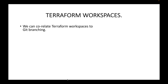Git branching can be used whenever you want to isolate your work. By default we have one branch in Git, which is either your master branch or the main branch. Whenever a developer wants to make any changes to the code, we create a branch — let's call it a feature branch — and that feature branch is where we make our changes.